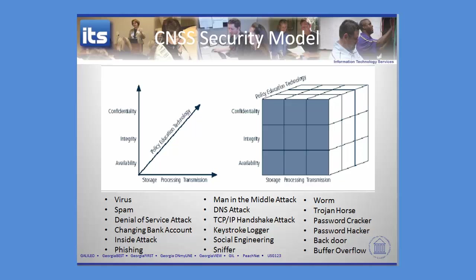Spam is where you have email coming in that is unsolicited and unwanted, typically selling things you have no interest in. Folks are doing this because of the profits associated. For every hundred emails you don't click, there's someone else in the world who will click it, who will send money or personally identifiable information, allowing bad actors to break into their computers. So spam is just that collection of email coming in that you have to deal with.